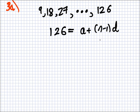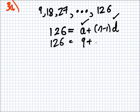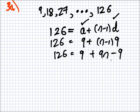A plus N minus 1 times D. Do we know the A here? We do. What's the A? 9. And do we know the D? Yes. We do. What is it? 9. So, we have 126 equals 9 plus N minus 1 times 9. I'll have 126 equals 9 plus 9N minus 9.